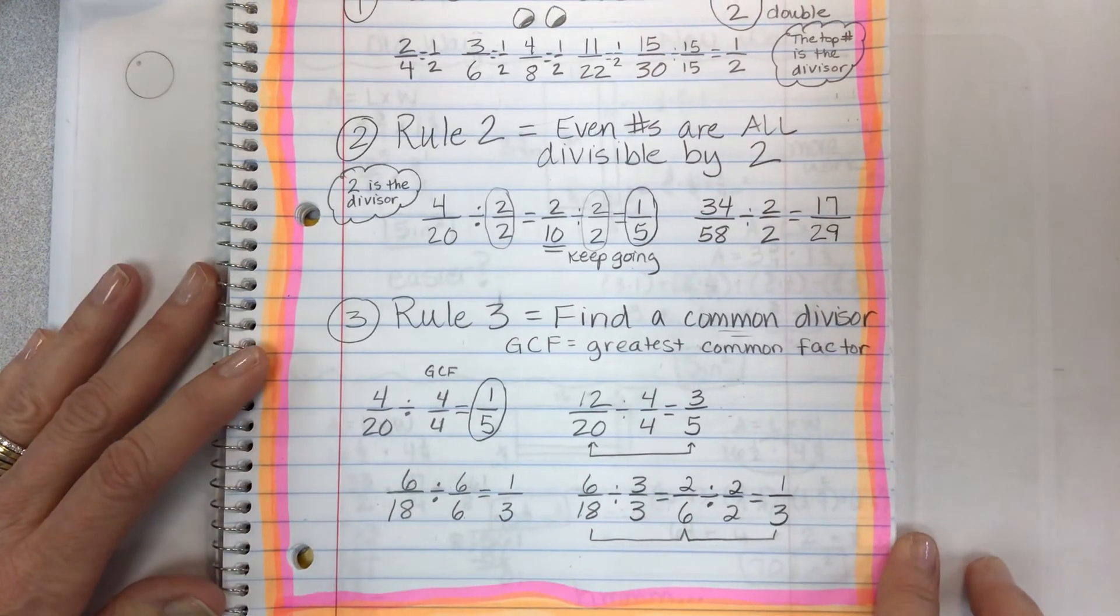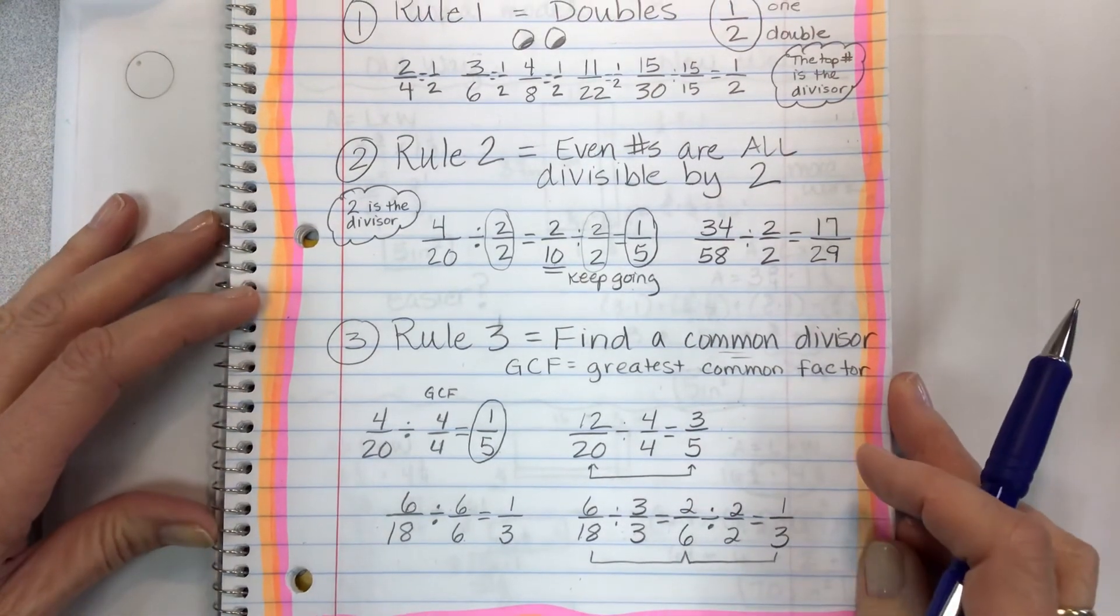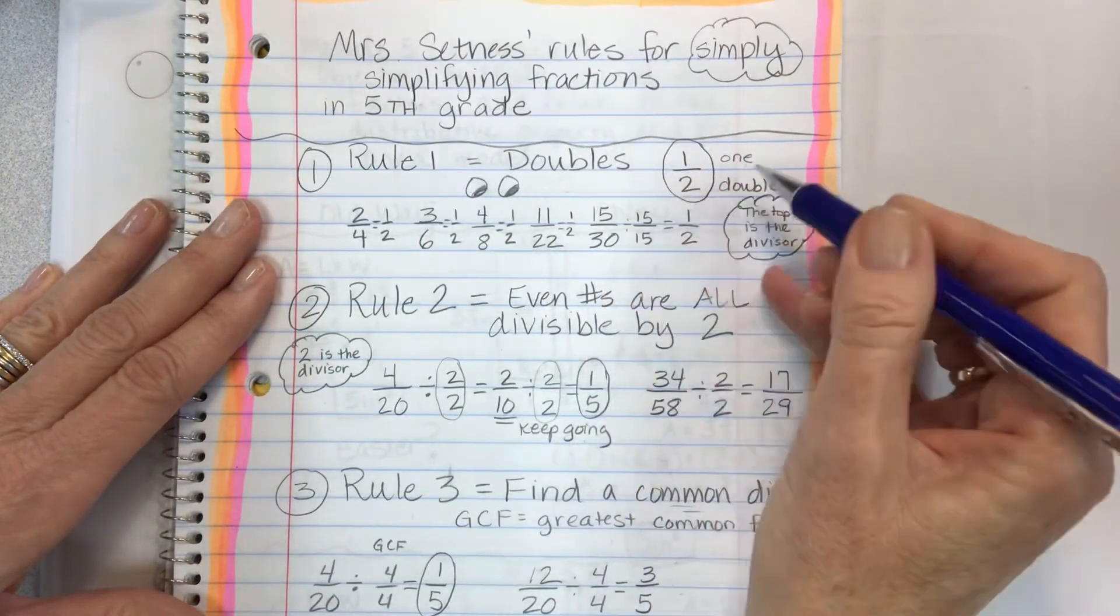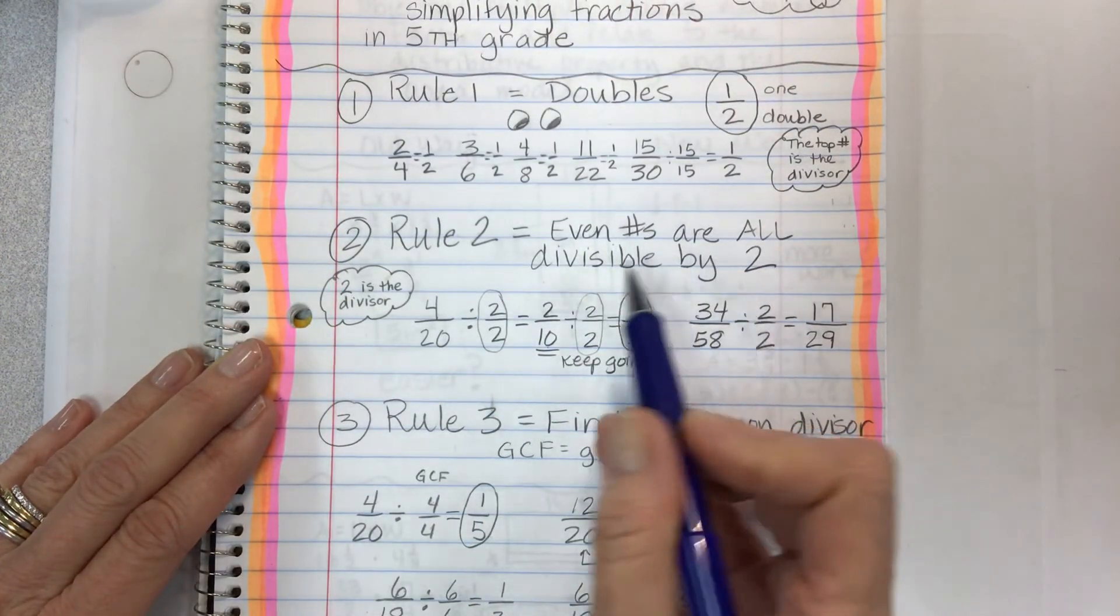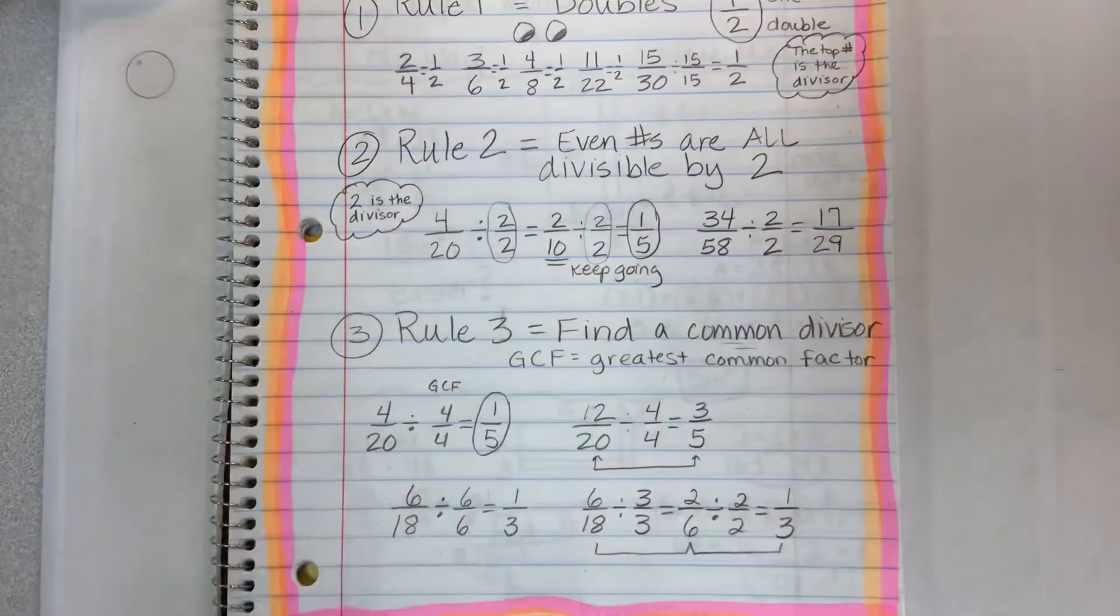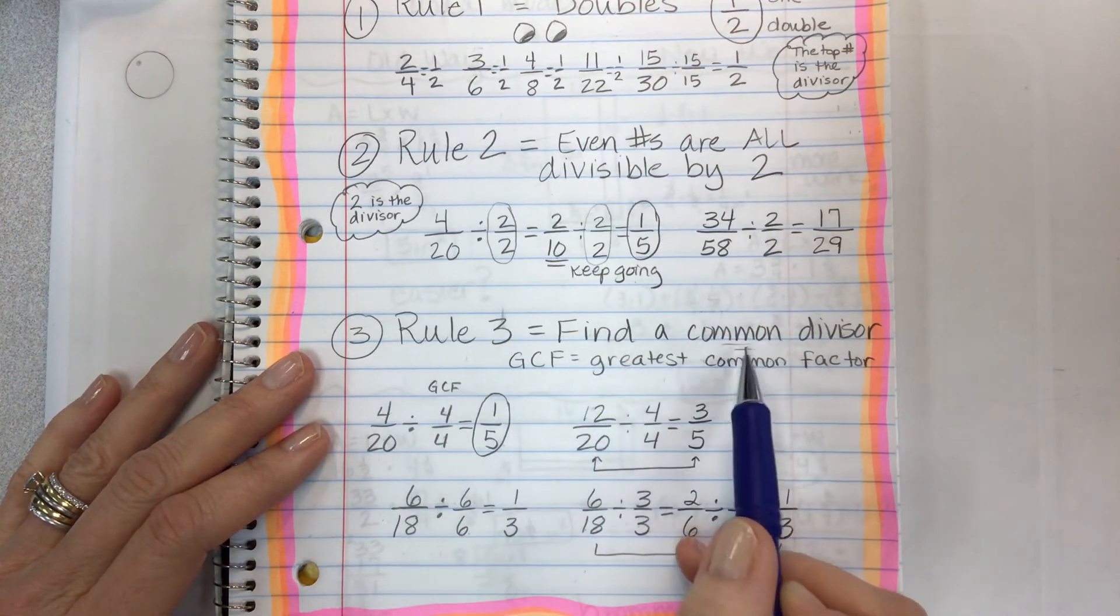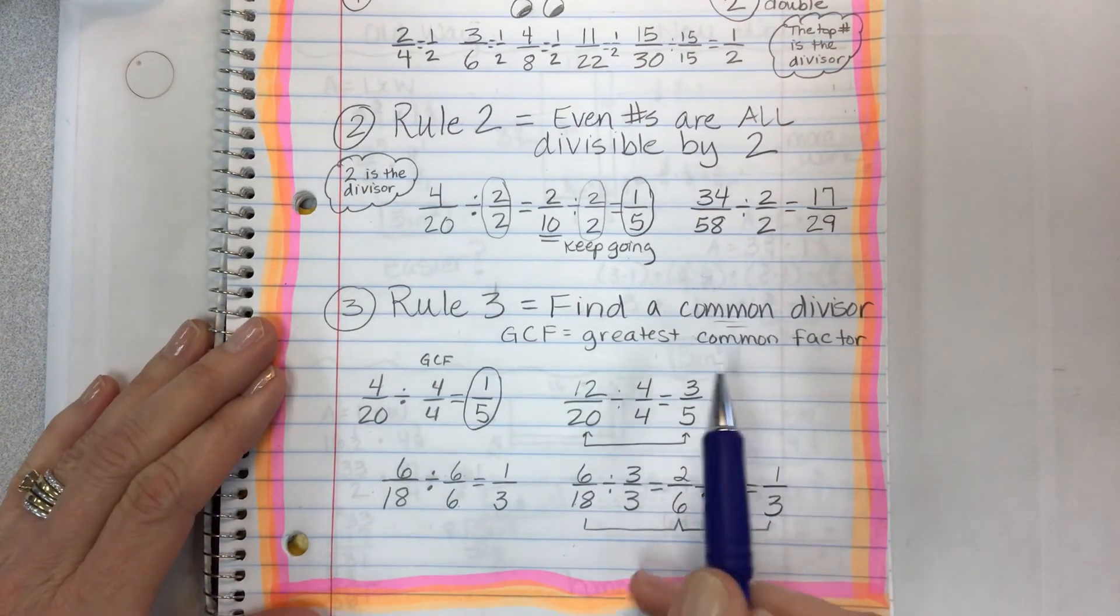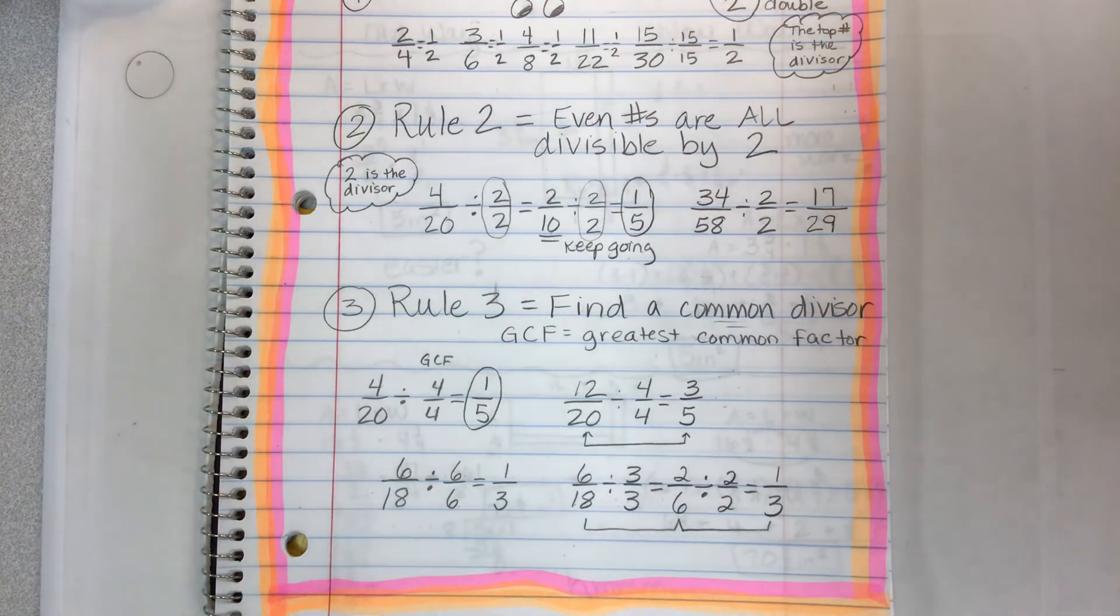So basically, those are my three rules for simplifying. To really make it easy for the young kids, rule one, look for those doubles. If it's doubled from the top to the bottom, it's equal to half. Rule two, all the even numbers are divisible by two. Start dividing by two until you can't go any lower or till another factor comes up and then you can divide by something else. Rule three, find a common divisor. Really, ideally, the greatest common factor. And if you can do that, you can divide in one step and simplify in just one step.